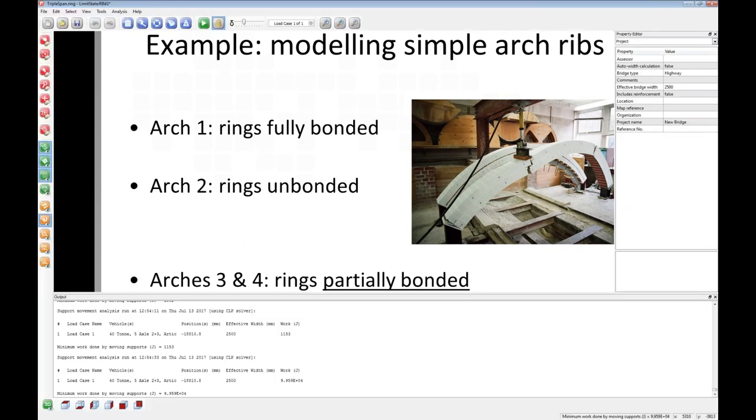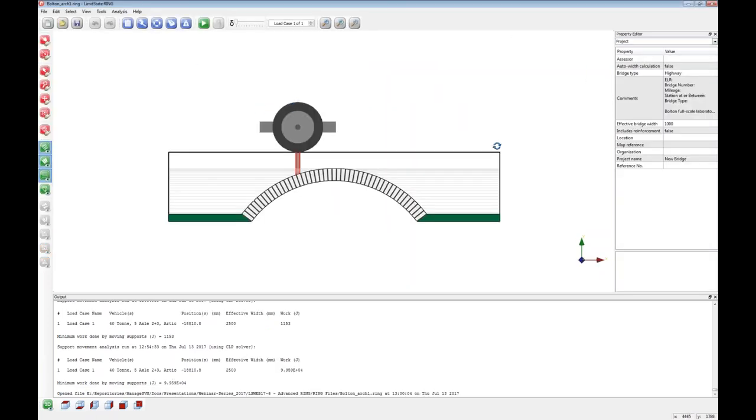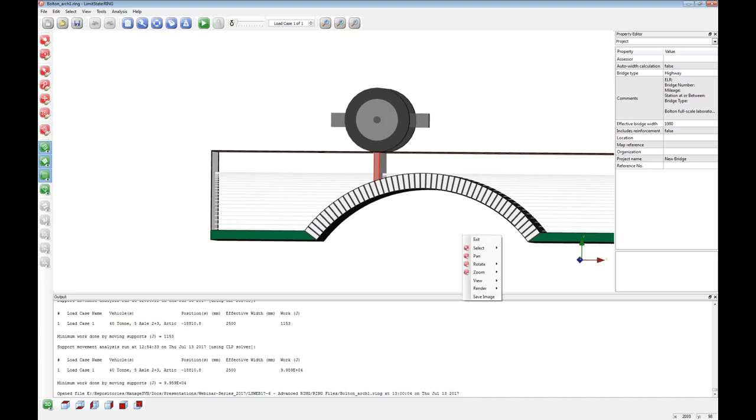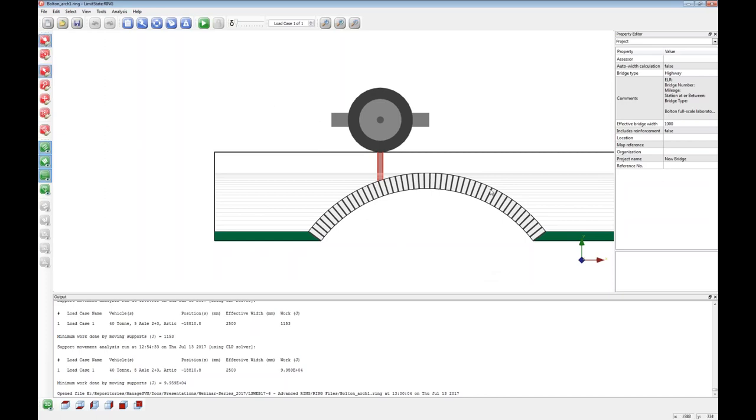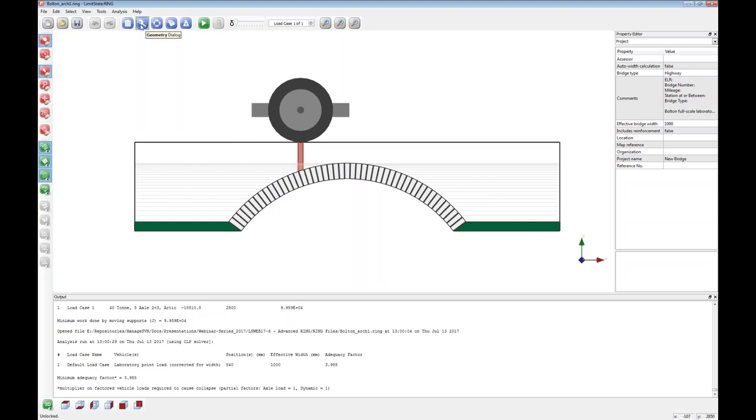To start, I've got a very simple example. It's some simple arch barrel tests that were carried out as part of my PhD studies about 25 years ago. We had four arches. The first one had mortar bonding between the rings. Arch two was exactly the same except we put damp sand between the rings to replicate degraded mortar. In arches three and four, we tried to strengthen the ring-separated case by putting in plates or headers at five locations around the span. I'm going to go through the process of modeling this in the software.